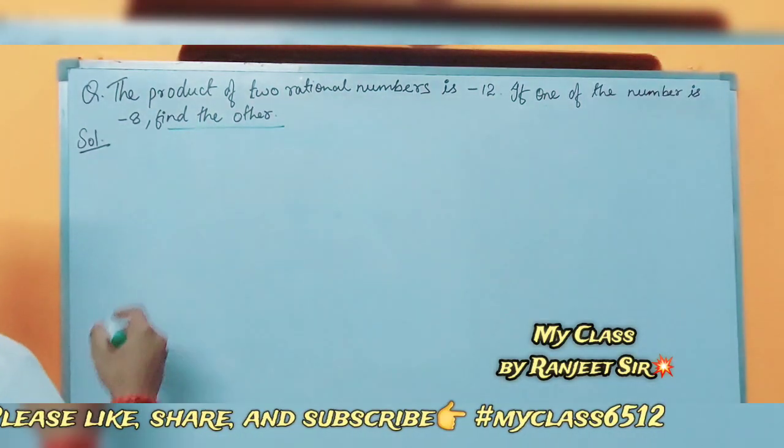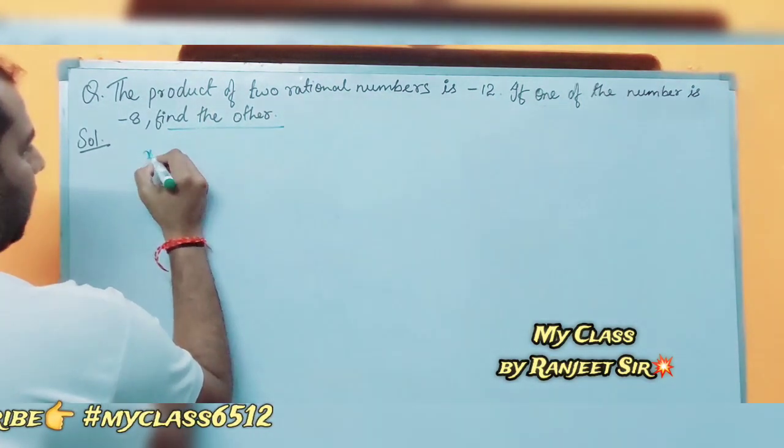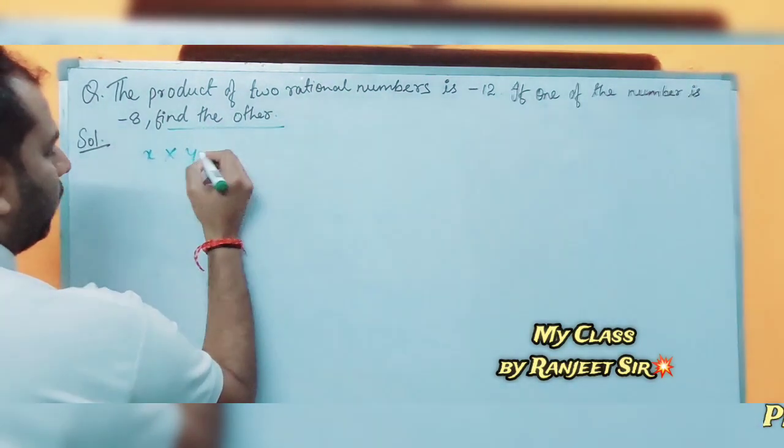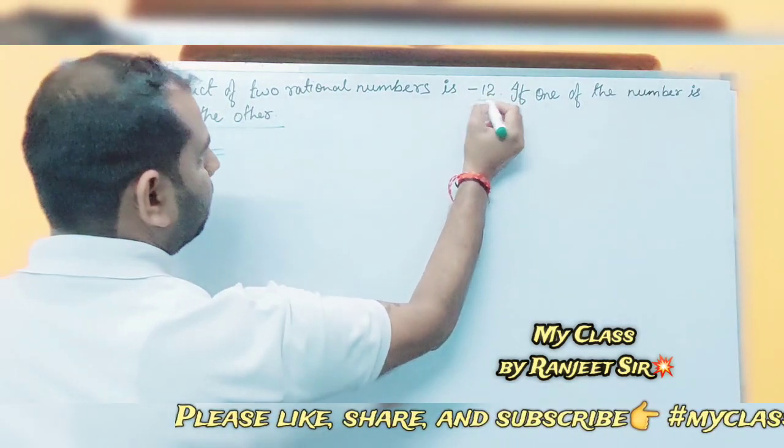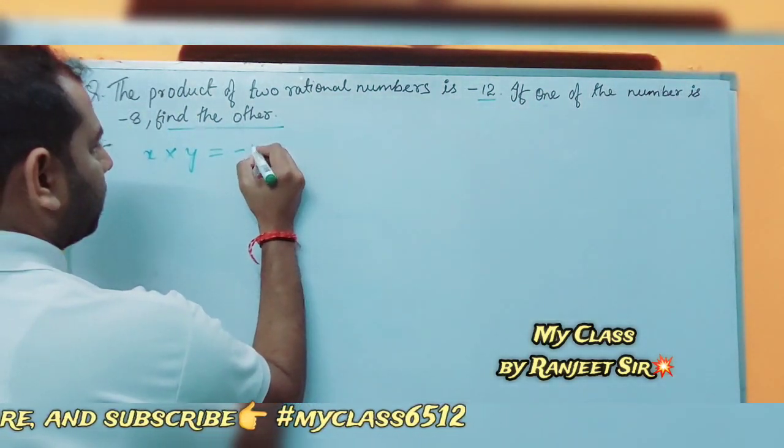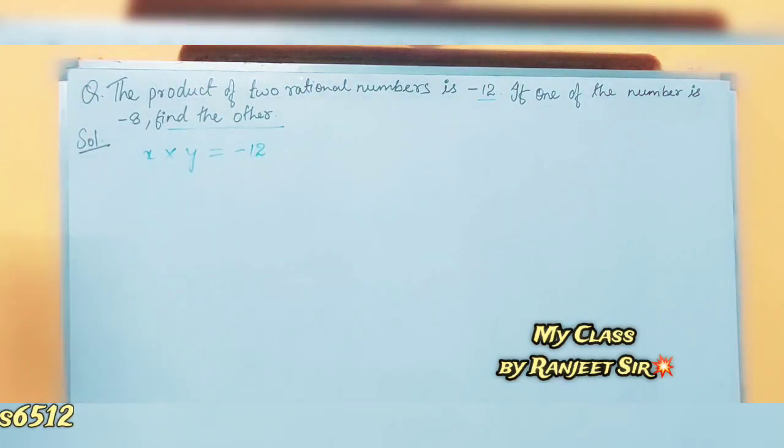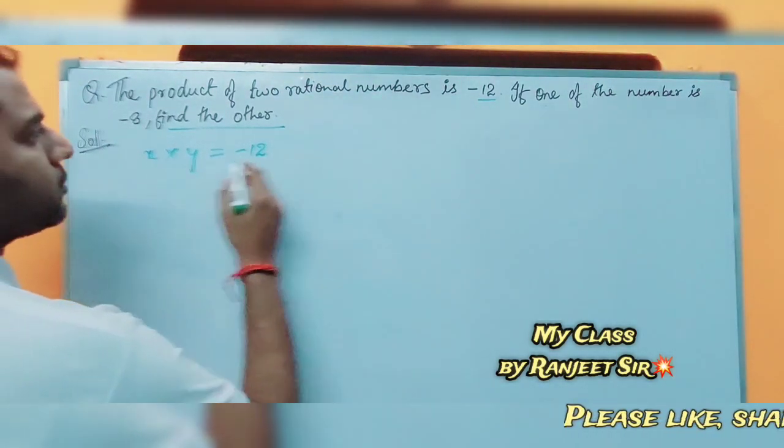Suppose that x and y are rational numbers. The product equals minus 12. If one of the numbers is minus 8, we need to find the other number.